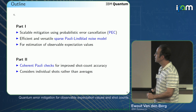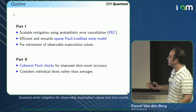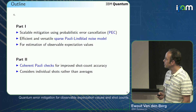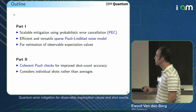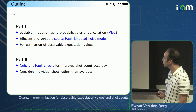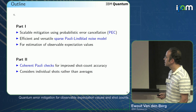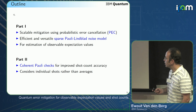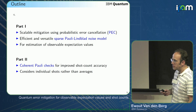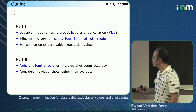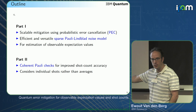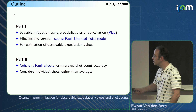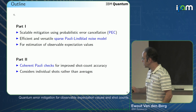This talk has two parts. The first part is about a scalable mitigation method based on probabilistic error cancellation. It uses an efficient and sparse Pauli-Lindblad noise model and is intended to estimate observable expectation values. In the second half, we look at coherent Pauli checks, a technique that can be used to improve shot count accuracy — not just averages over many circuits, but individual circuits.